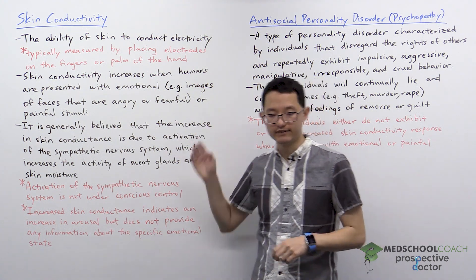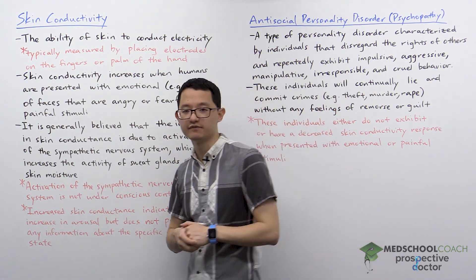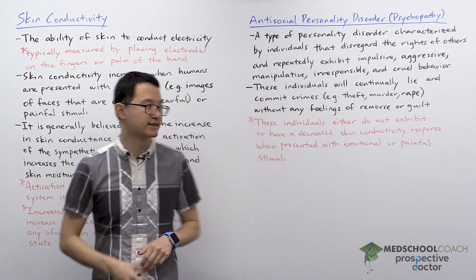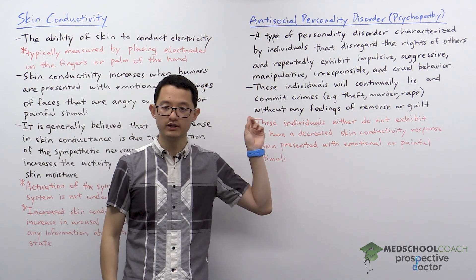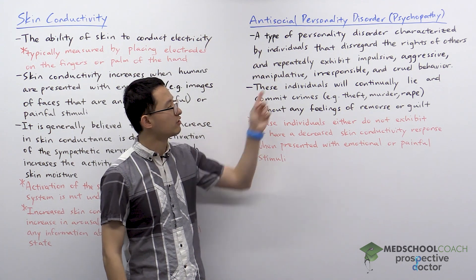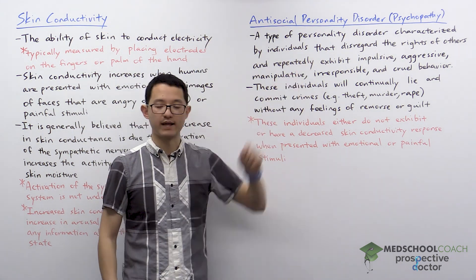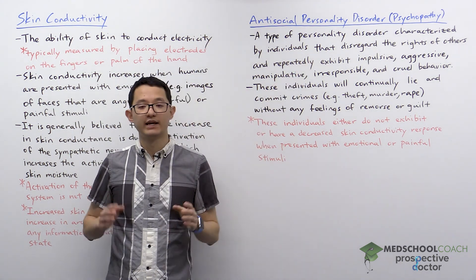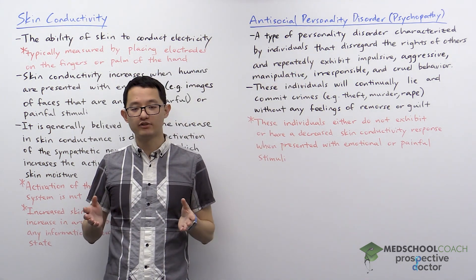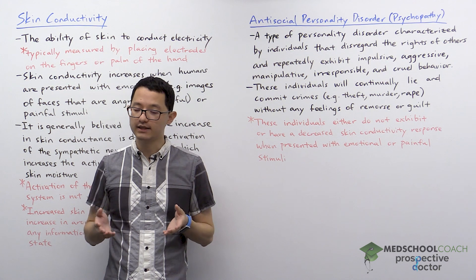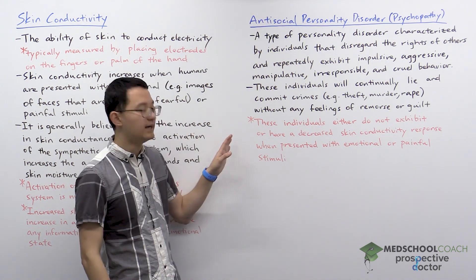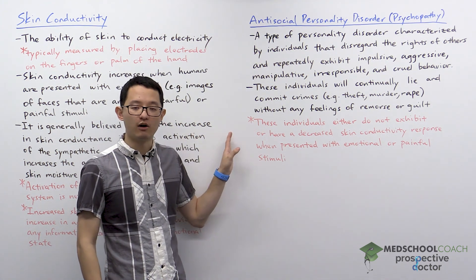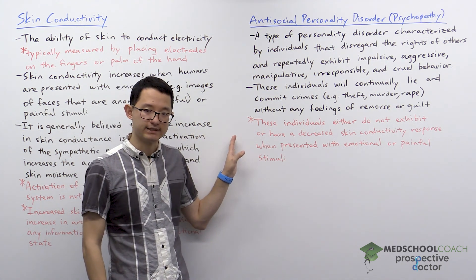So this is skin conductivity. Let's now shift over to discussing antisocial personality disorder, also called psychopathy. At first, these two topics seem completely unrelated, but as we're going to see, the two are connected.